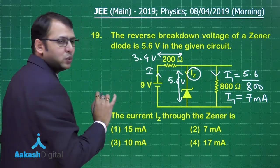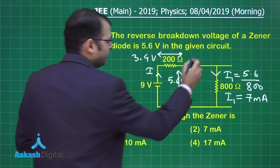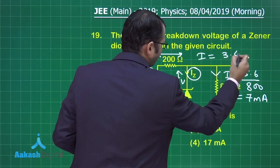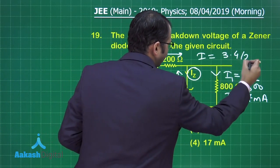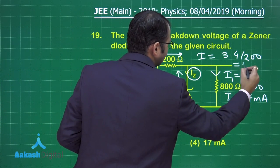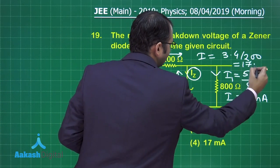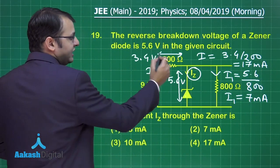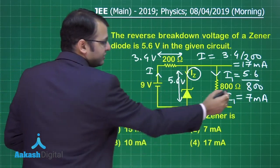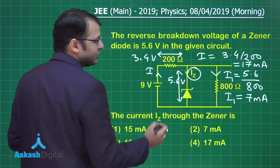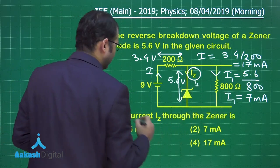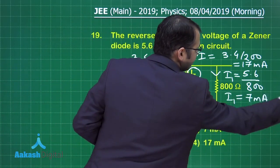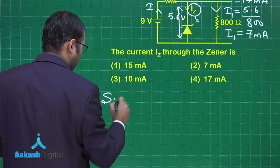The total current i from the source would be 3.4 volts divided by 200 ohms, giving i equals 17 milliamperes. From these 17 milliamperes, 7 milliamperes goes through the resistor, so the remainder is Iz.